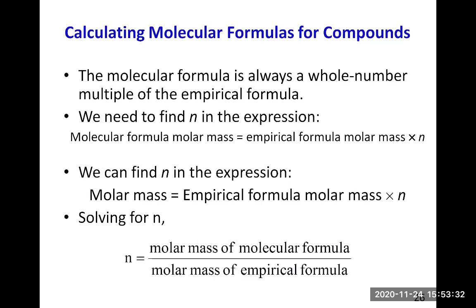If you are given the molar mass of the molecular formula, and you can find the empirical formula and calculate its molar mass, then you can find n. Then you multiply the empirical formula by n to get the molecular formula of your compound.